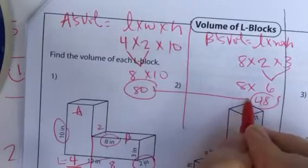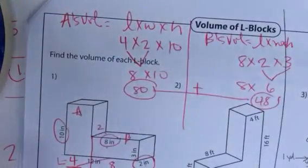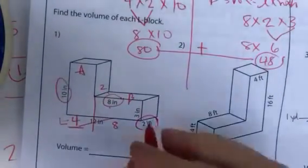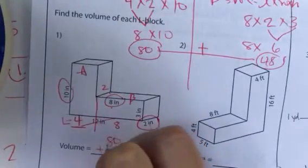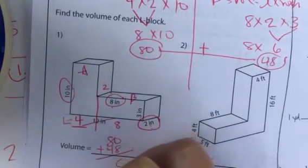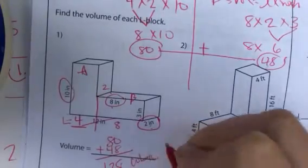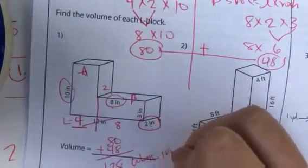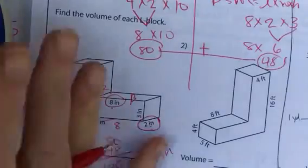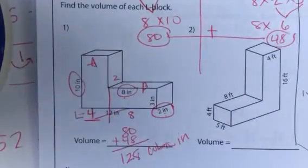So, I take both of these numbers. I add them together. 80 plus 48 is 128 cubic, and this is inches. Cubic inches. 128 cubic inches.